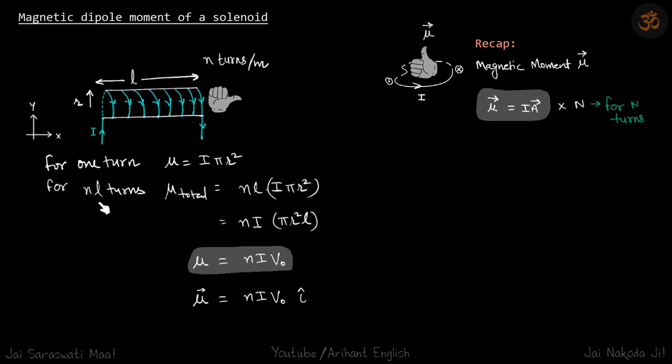For the complete solenoid with nL turns, μ_total = nL·i·πR². Taking i out and L inside: μ = nI·πR²L. Since πR²L is the volume V₀ of the solenoid, we can write μ = nIV₀.